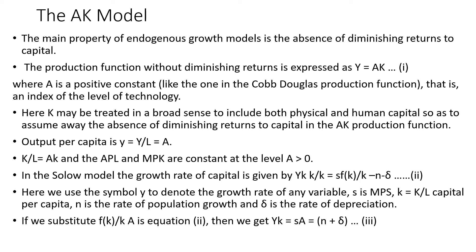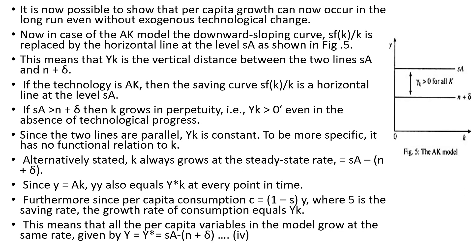This shows it is possible for per capita growth to occur in the long run without exogenous technological knowledge. In the AK model, the downward-sloping curve is replaced by a horizontal line shown by sA. The vertical distance between the two lines, sA and n+δ, gives ẏ/k. If sA is greater than n+δ, then k grows in perpetuity. Since the two lines are parallel, ẏ/k is constant — k always grows at a steady rate.